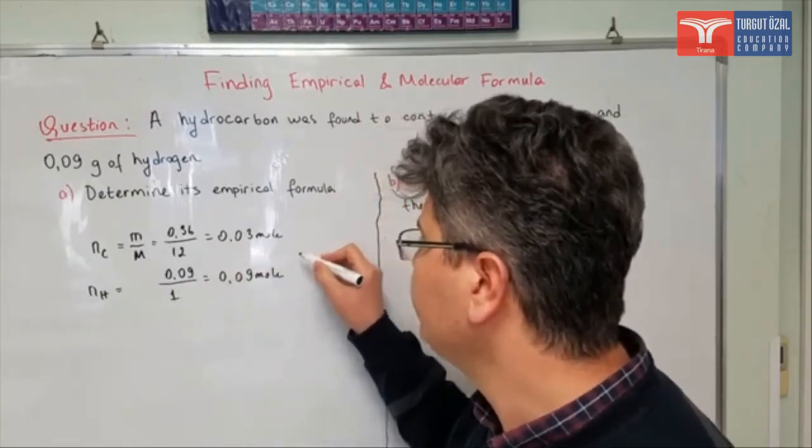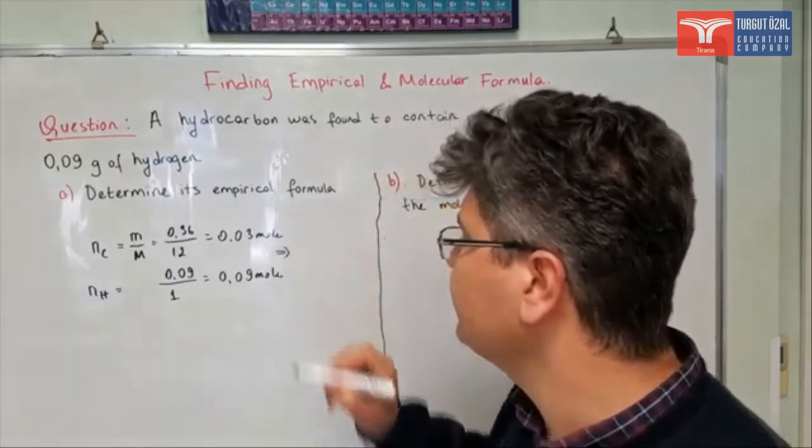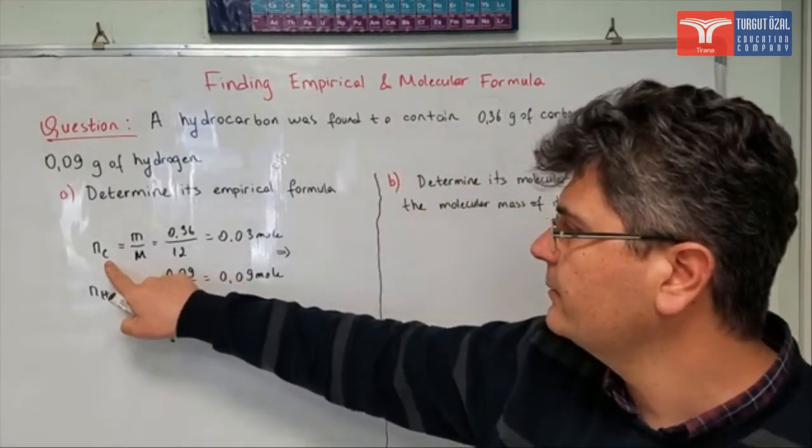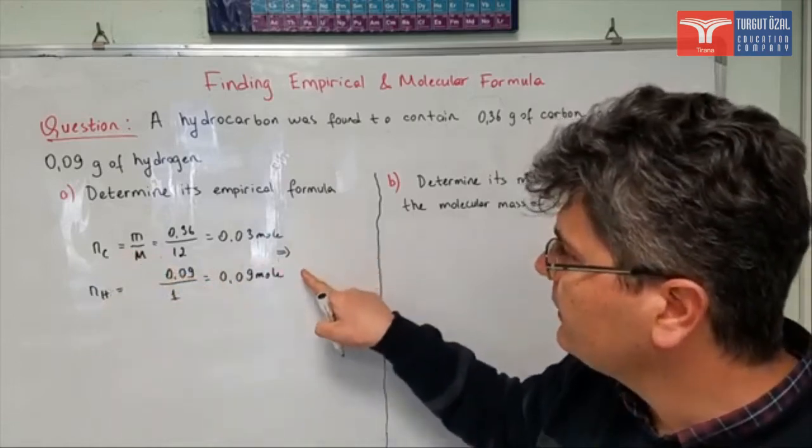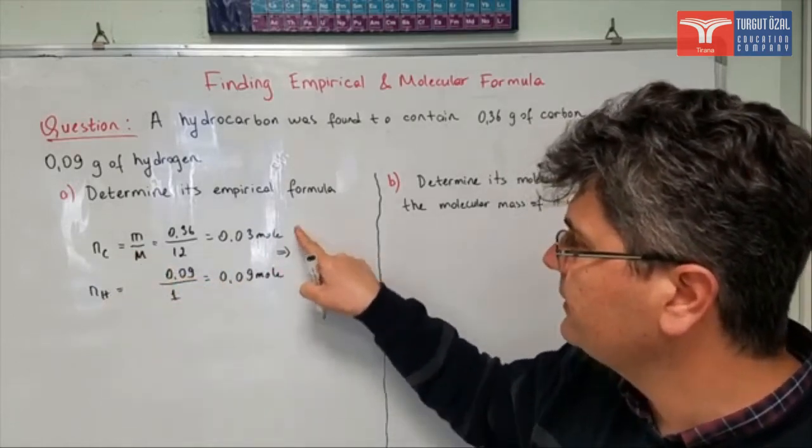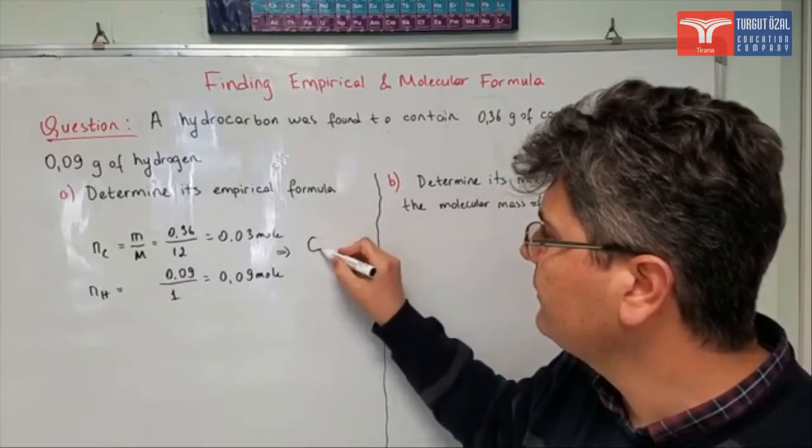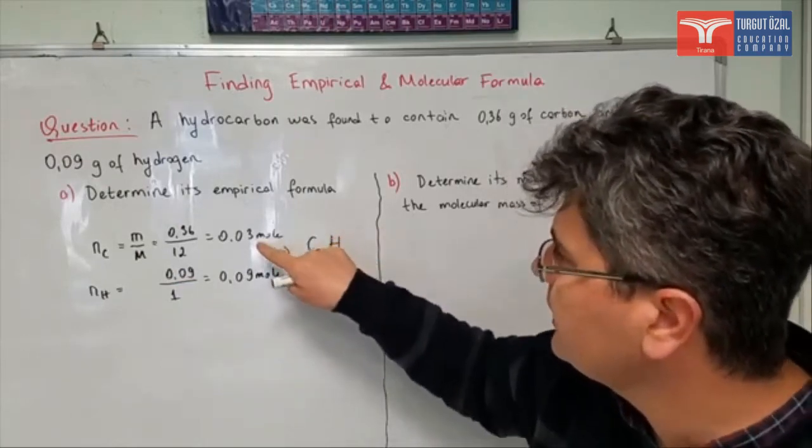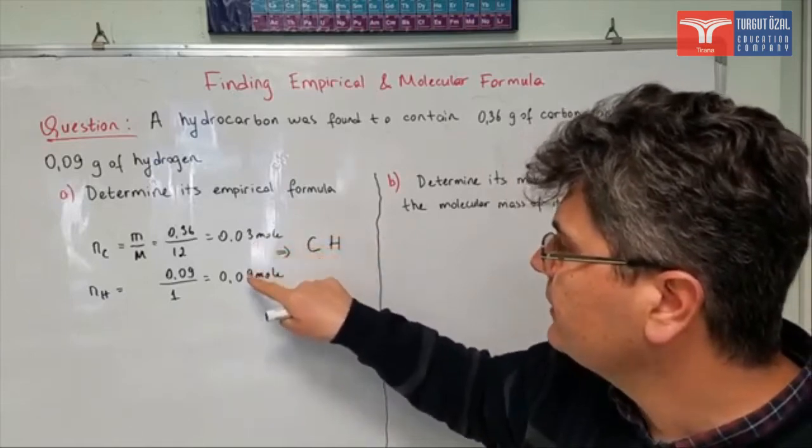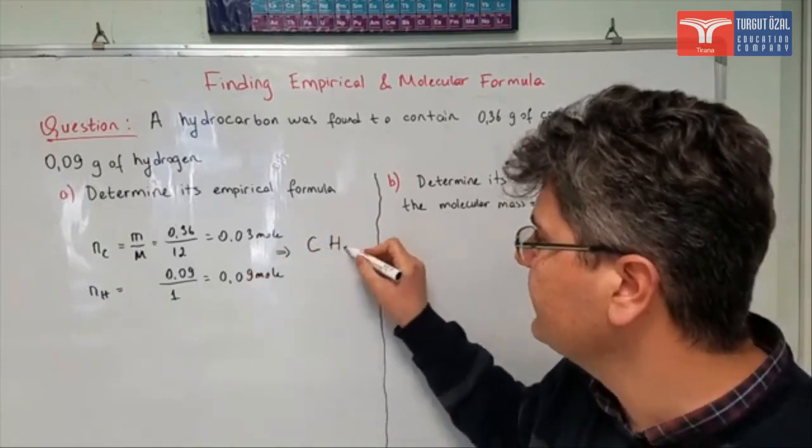So from here, you can see that the ratio between the mole number of carbon atoms and mole number of hydrogen atoms is 1 to 3. This is 3 times bigger than this one. So the formula of my compound is going to be, attention please one more time, the proportion is 1 to 3, so it's going to be CH3.